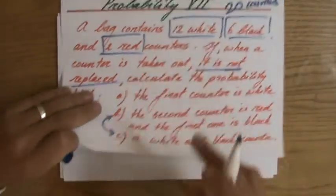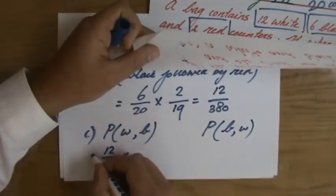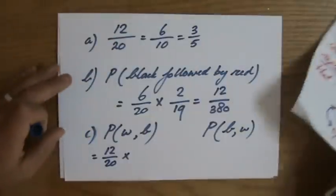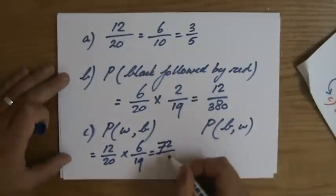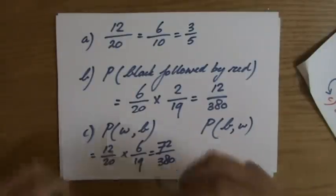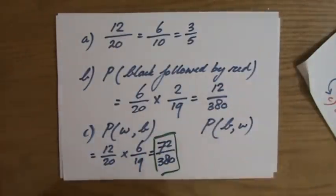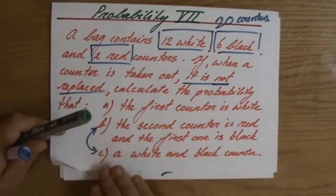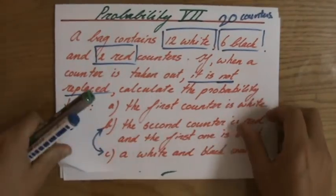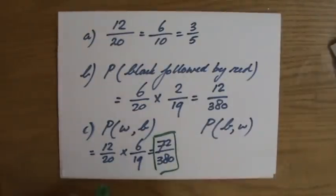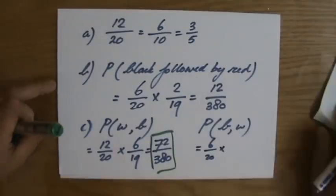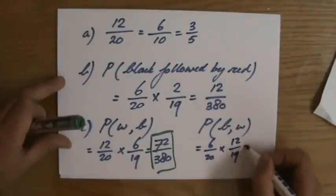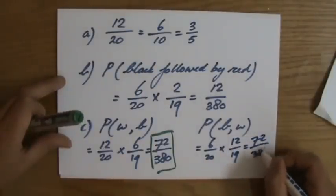What is the chance of a white and then a black one? Well, 12 out of 20 for the white, times, and then black is 6 out of 19. So that is 72 out of 380. That is the chance of getting a white and then a black one. However, if the order doesn't matter, a white and a black one, if the order doesn't matter, then I can also have this chance. So first a black one, so 6 out of 20 times, and then a white one, which is 12 out of 19. And that equals as well to 72 over 380.